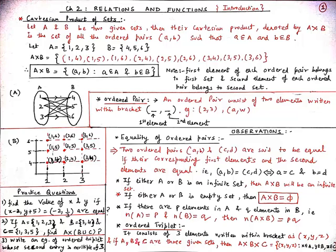Now student, we will find A cross B which is {(1,4), (1,5), (1,6), (2,4), (2,5), (2,6), (3,4), (3,5), (3,6)}. So here, these all are ordered pairs.